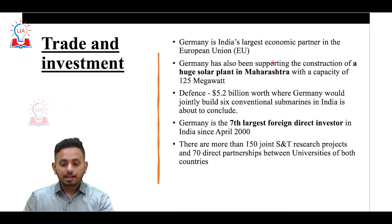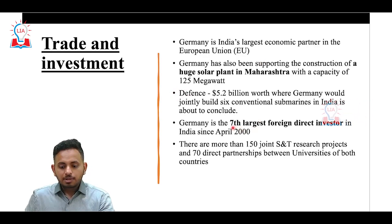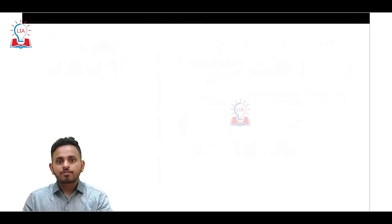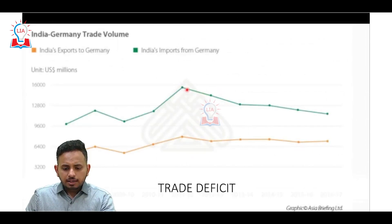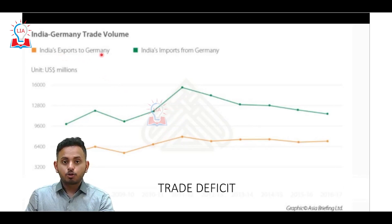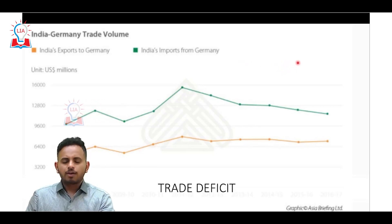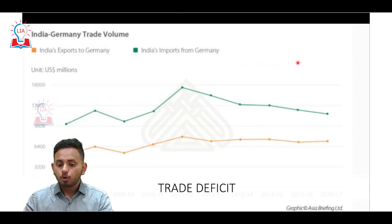There is also cooperation worth 5.2 billion dollars in defense manufacturing, as Germany is very advanced in automation and science and technology. Germany is the seventh largest source of FDI for India. There are more than 150 joint science and technology research projects between Indian and German universities. Looking at the trade graph, the green line shows India's imports from Germany and the yellow line shows India's exports — it is evident that India has a trade deficit with Germany, meaning we import more than we export.